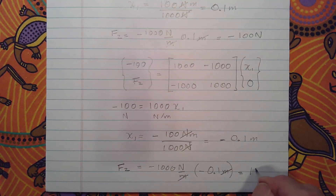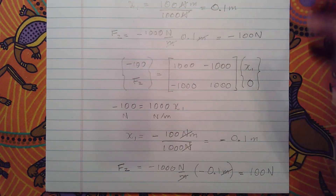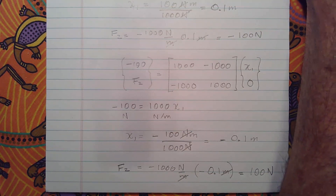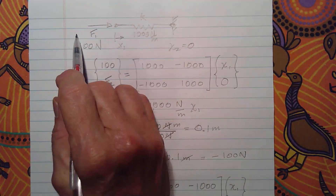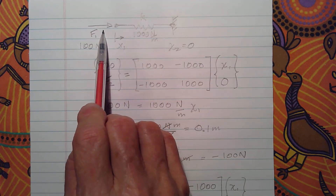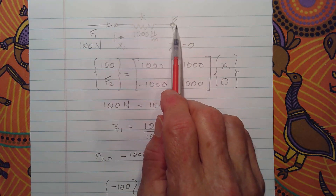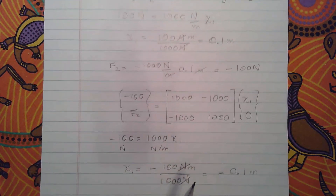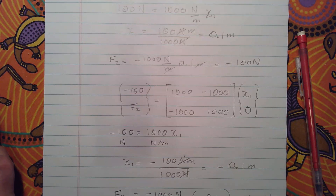The methodology is working correctly for tension as well. Pulling on the spring gives a negative nodal displacement (moving left) and a positive rightward reaction force where the spring hooks into the wall — exactly as expected. I'll stop here and continue with another example in video number three.